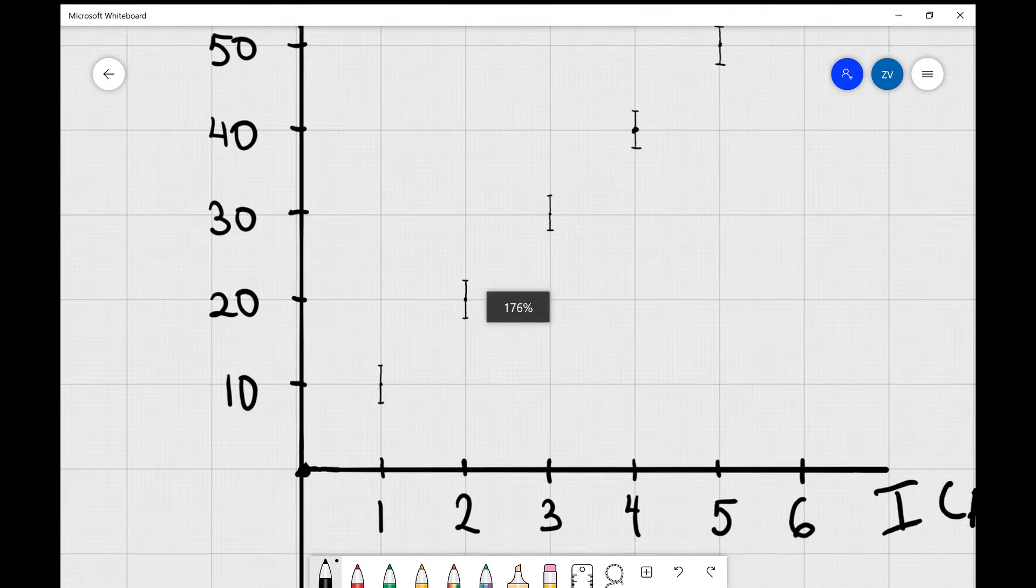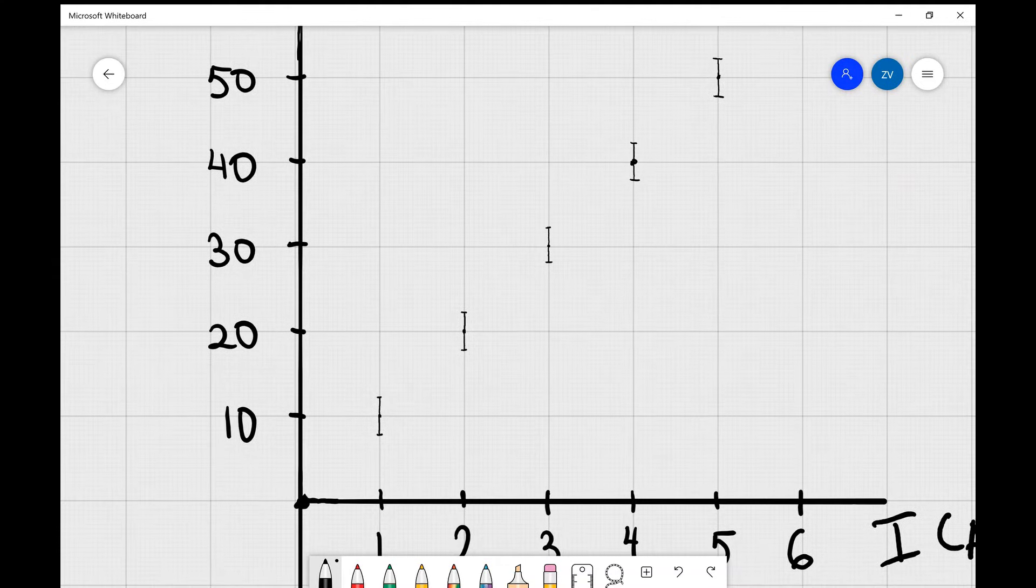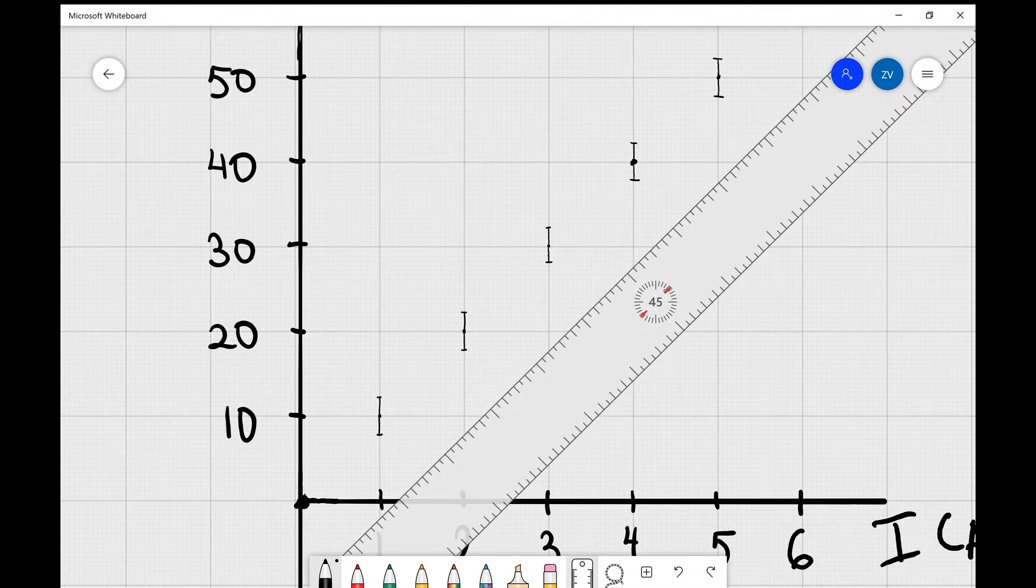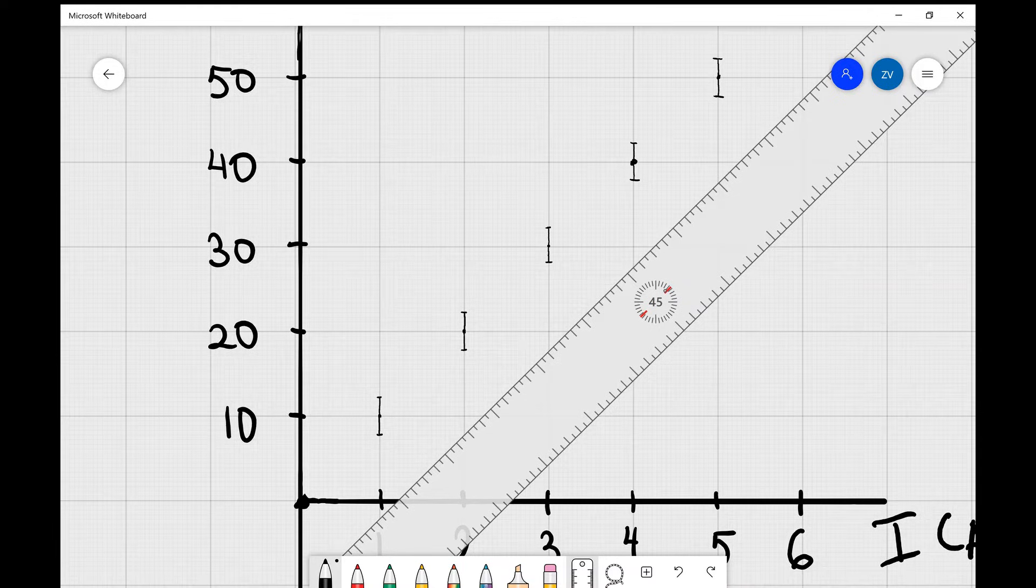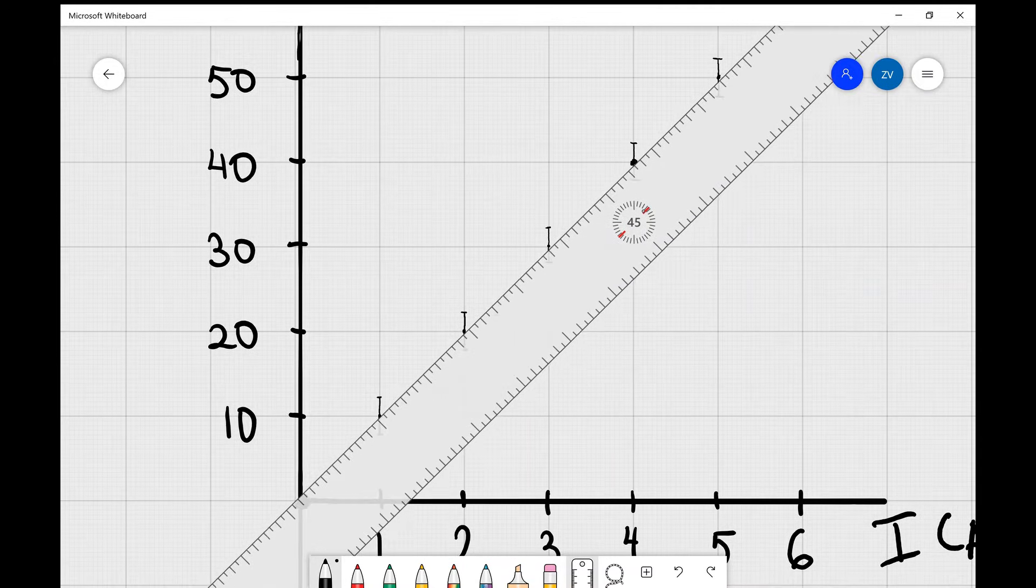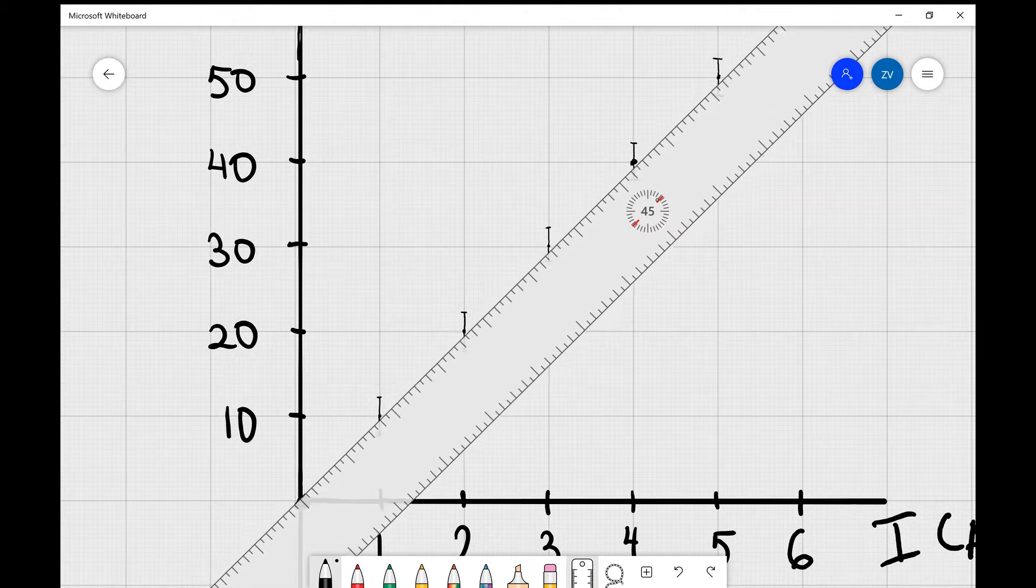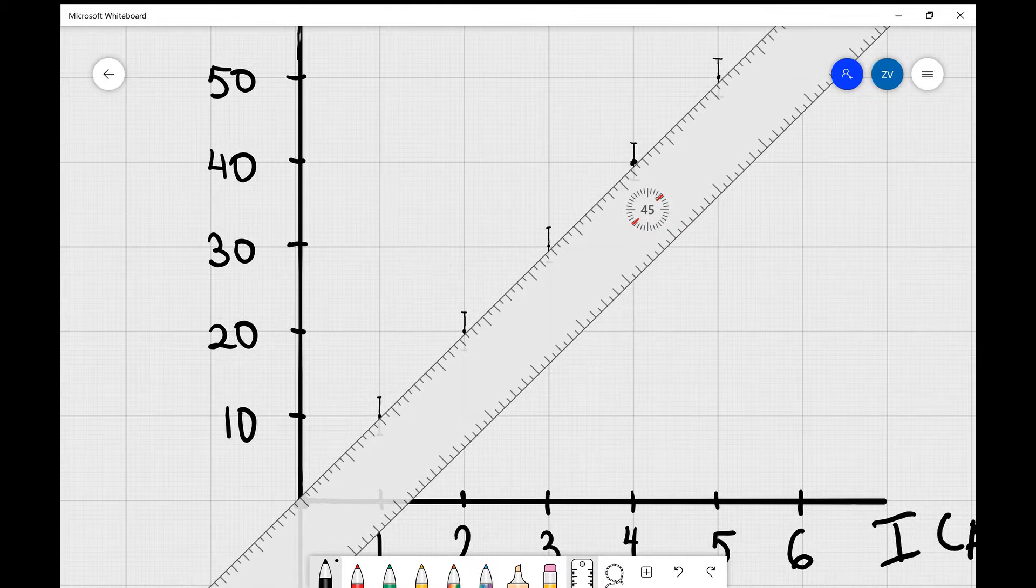Now, the first thing that we're going to need to do is draw the line of best fit. The way we're going to do this is by trying to go through the center of these error bars. We need to make sure that the line of best fit passes as close as possible through the center of those error bars.